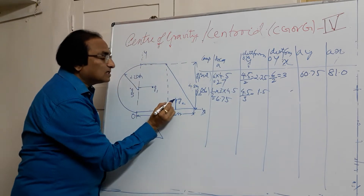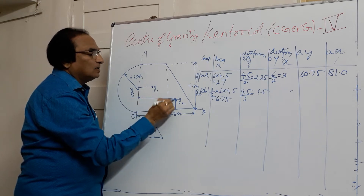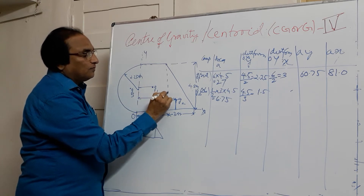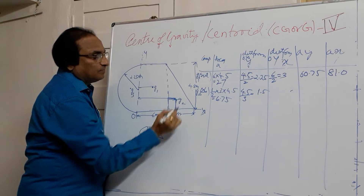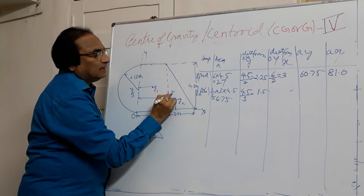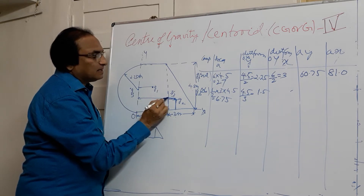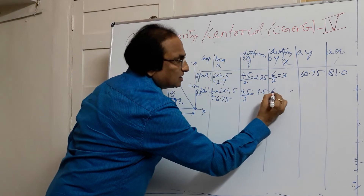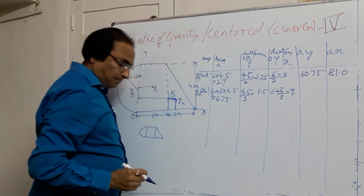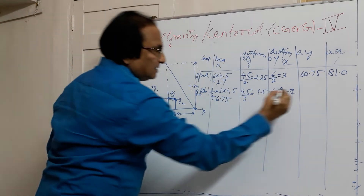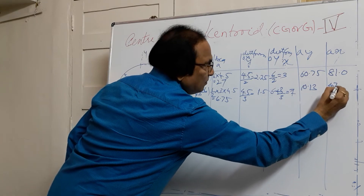Now I want the distance of the centroid from OY. For the triangle, the centroid is one-third of the height from the base in this direction. The height in this direction is 3, so that gives 3 divided by 3, but I want it measured from O. So the total distance is 6 plus 3 divided by 3, which equals 7. Multiplying: AY becomes 10.13 and AX becomes 47.25.